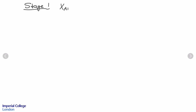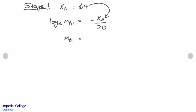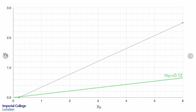Considering stage 1, the concentration of A in the aqueous phase leaving stage 1 was equal to 64. We calculate the partition coefficient MB for stage 1 using the expression given in the problem statement, substituting XA = 64 to get MB1 = 0.12. That gives us the slope of a line. We choose some values of X to generate values of Y and plot that line on our operating diagram — shown here in green, this is the slope of the line. This equilibrium is only valid for the first stage.